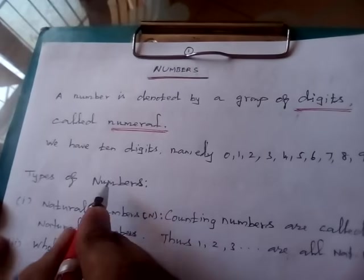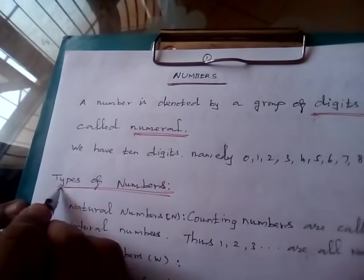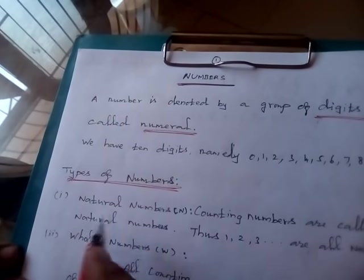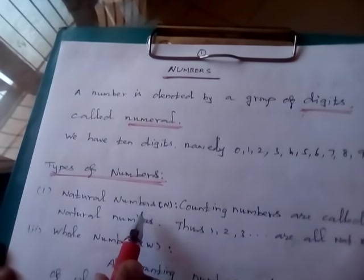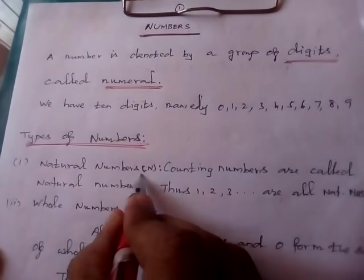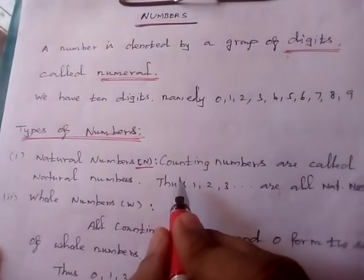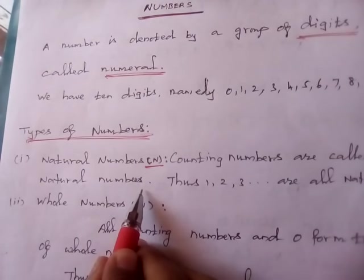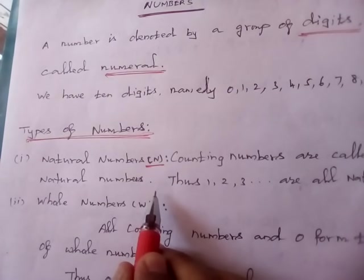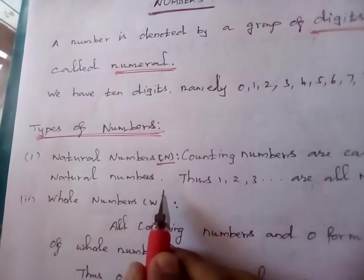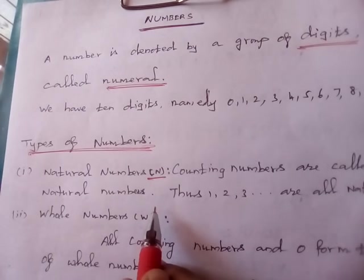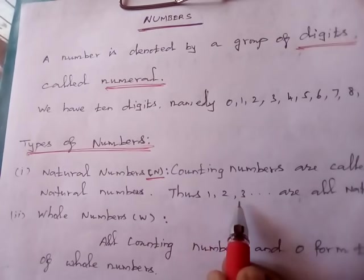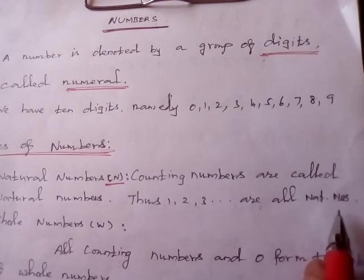Now we are going to see the types of numbers. The types of numbers are very basic. First one, natural number. Natural number is denoted by the letter N. Natural number is nothing but counting numbers. For example, 10, 20, 256. These are the counting numbers. Thus, the numbers starting with 1, 2, 3, etc. are all natural numbers.